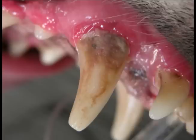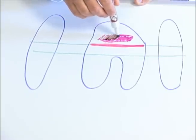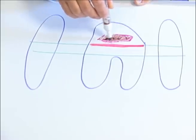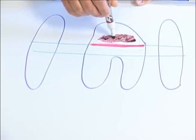Over time, the plaque will become calcified by the minerals in saliva to become calculus, or tartar. This is the brown stuff you may see on your pet's teeth.